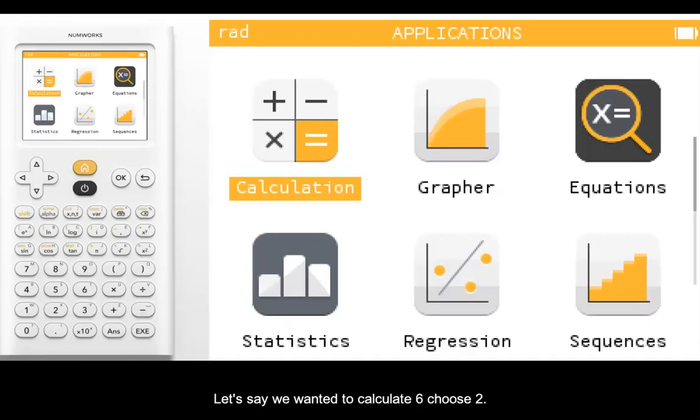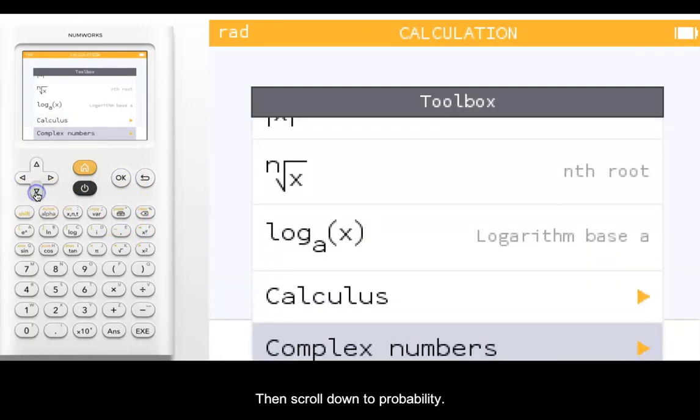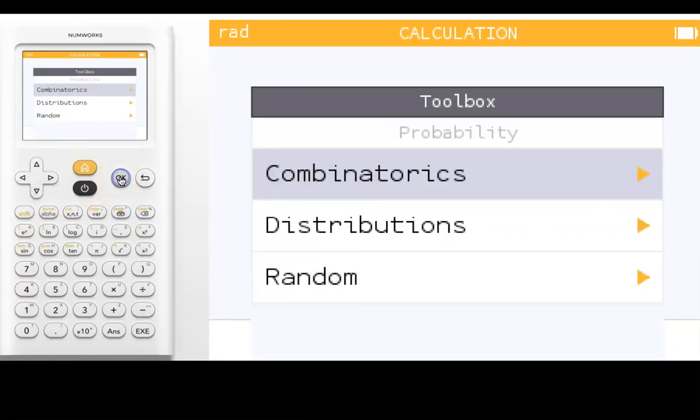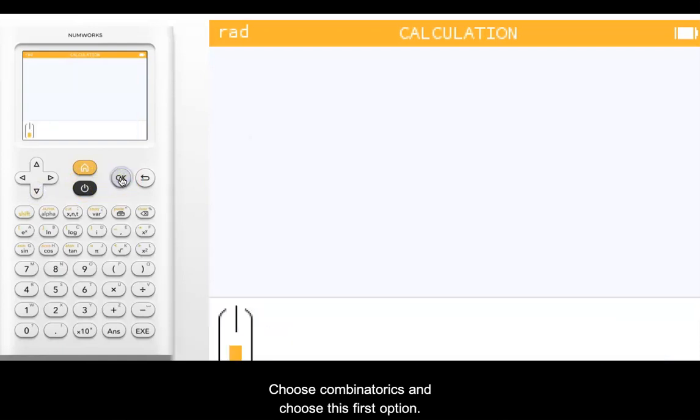Let's say we wanted to calculate 6 choose 2. To do that, we would hit OK on the calculation app, then choose the toolbox, then scroll down to probability, choose combinatorics, and choose this first option.